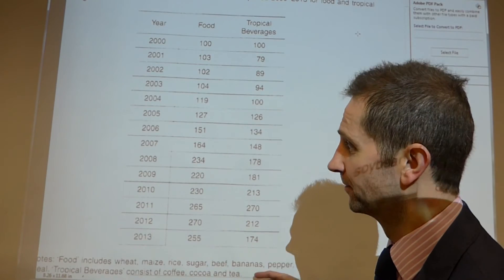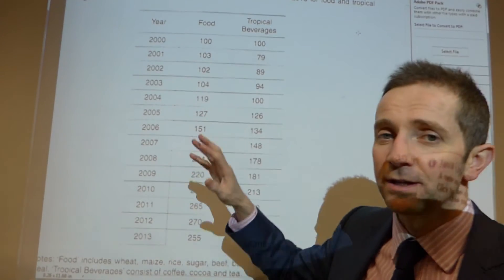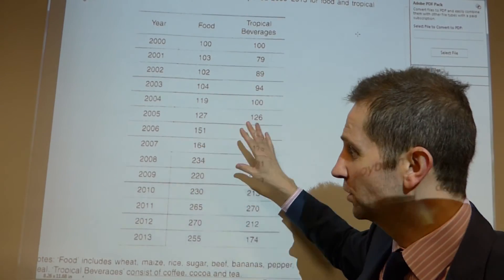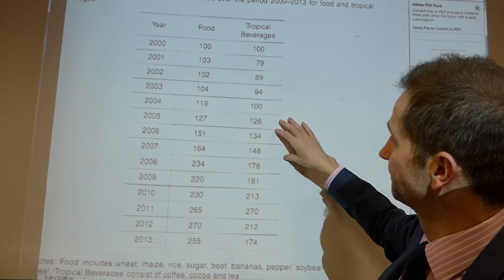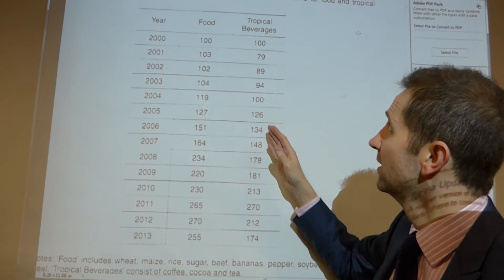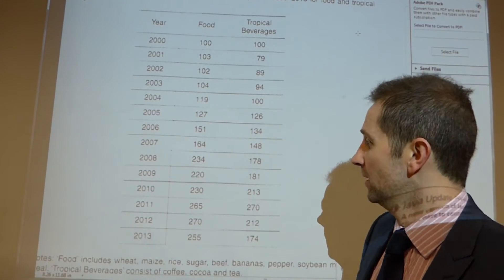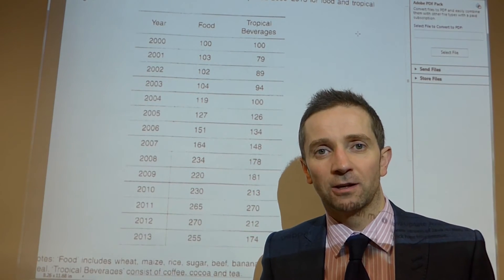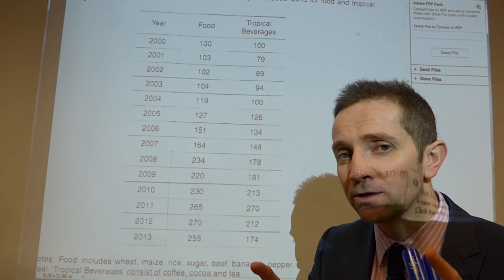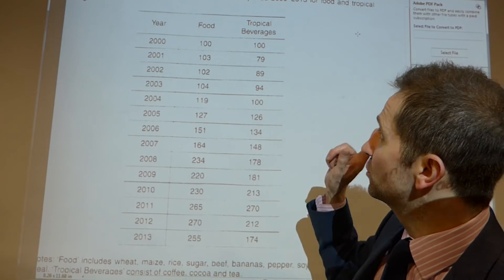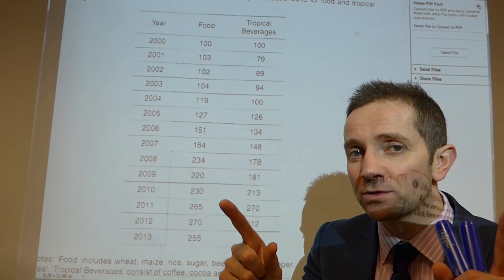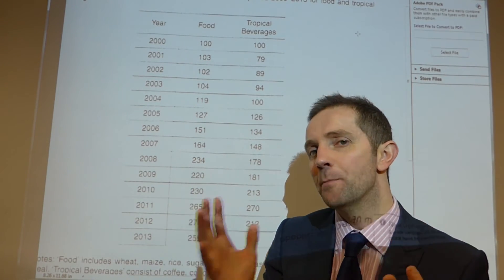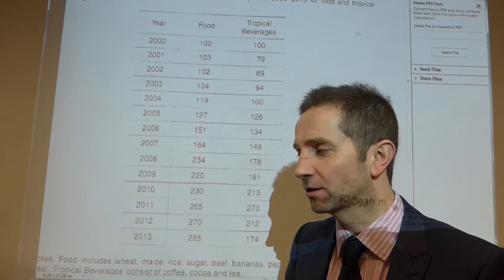Some candidates commented on the relative fluctuations of the data. If you study this quite closely, you can see that tropical beverages showed a much greater fluctuation than food prices. It's not sufficient to say 'both fluctuated' — you need to say that the key comparator here is that tropical beverage prices showed the greater fluctuations relative to food. Once we start comparing it to the other data set, then we're getting the comparative marks.